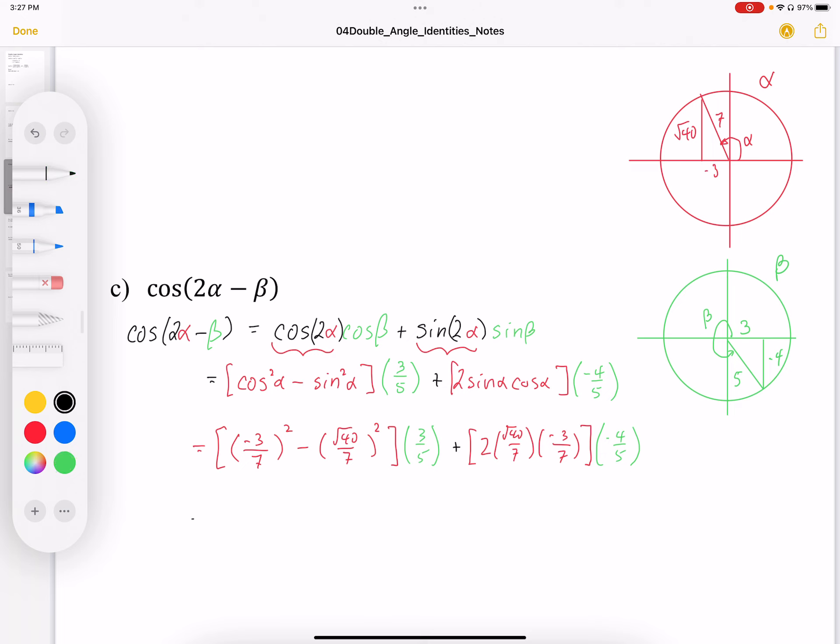So I end up with negative 3 squared is 9 over 49. Minus root 40 squared. So root 40 squared is going to be 40. And that's going to be over the denominator 49. And you'll notice that the denominators end up being the same.